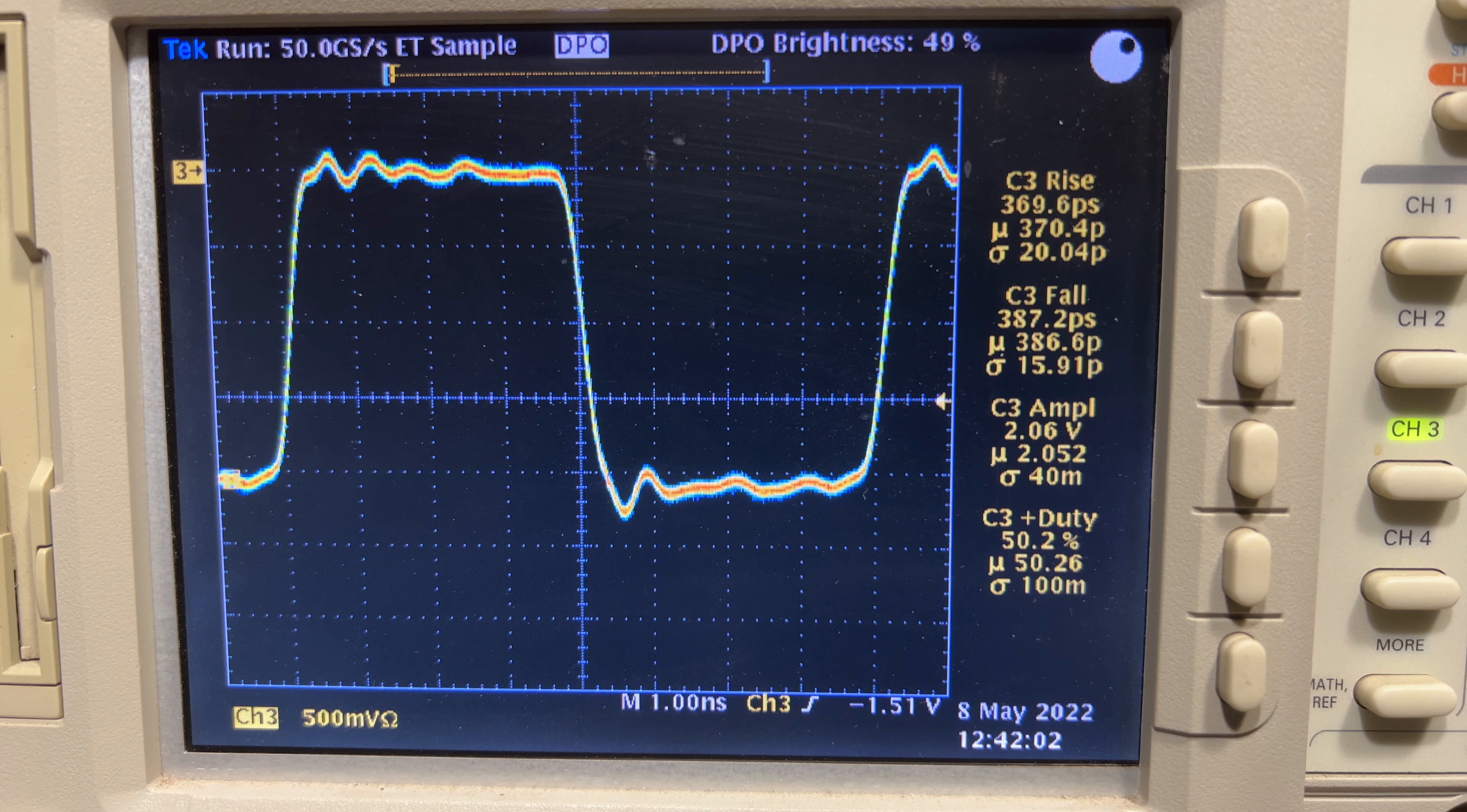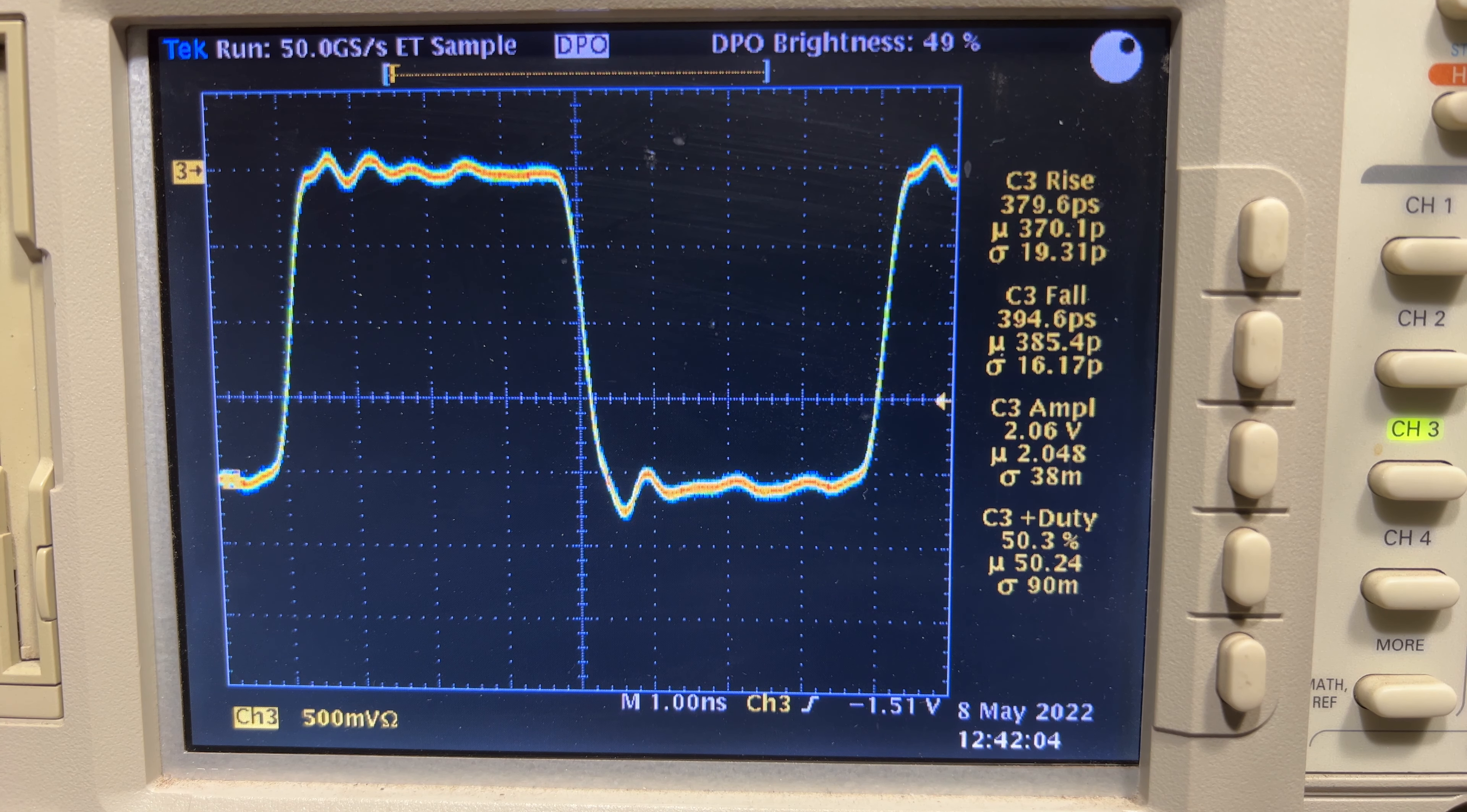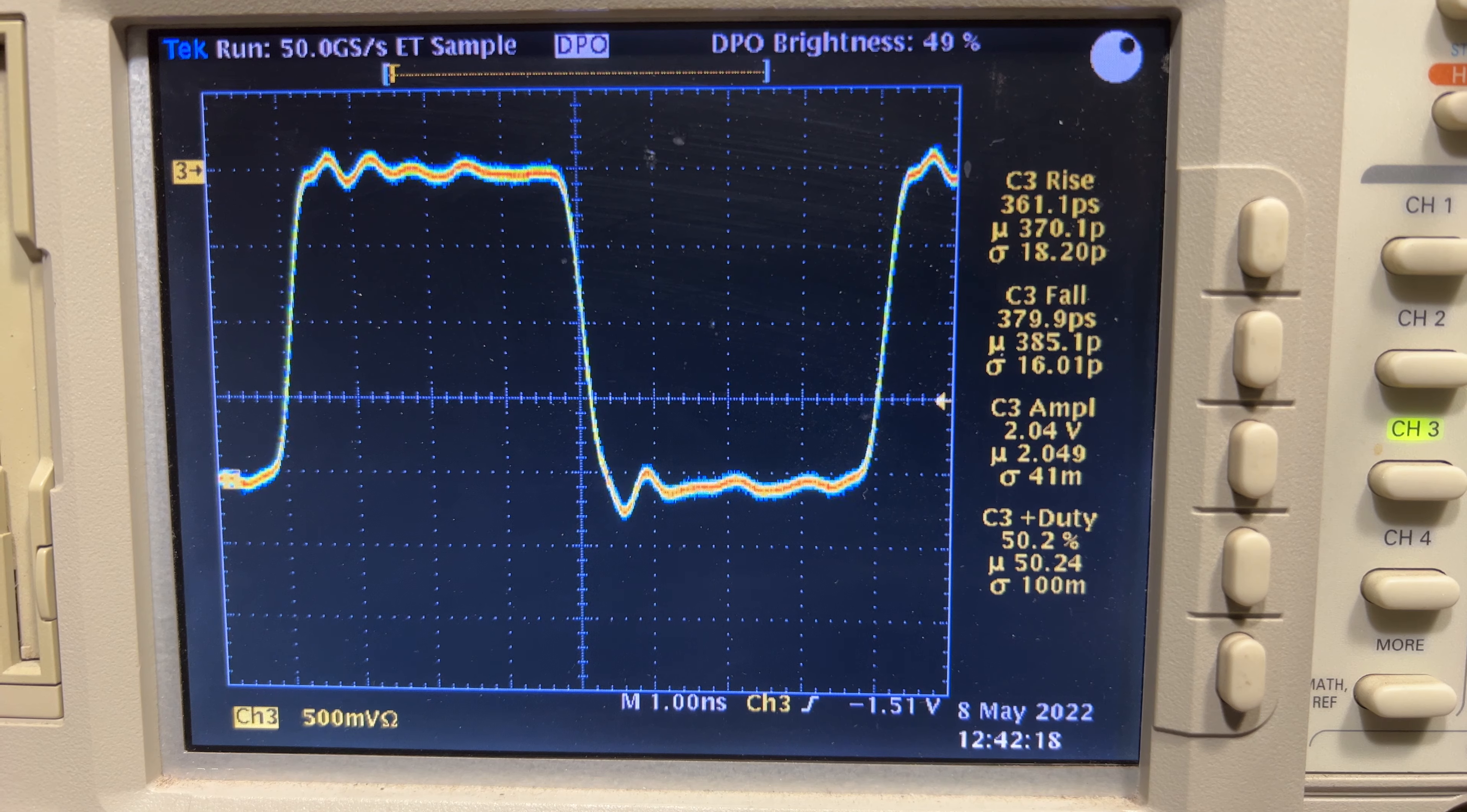But keep that in mind when we look at the rise and fall times of the cichlid pulse function generator. Any rise or fall time we measure that's anything less than about a nanosecond is probably shorter than we're measuring.